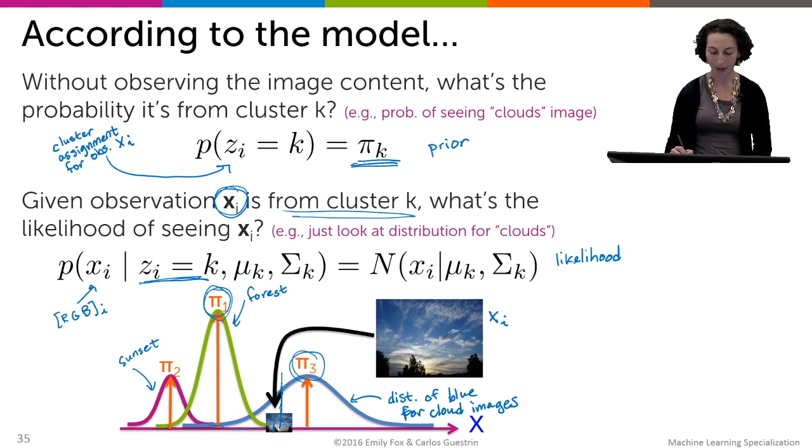I want to point out that this image, indeed, there should be uncertainty about whether it's assigned to the clouds cluster or the forest cluster, because here we see some trees and here we see some clouds. So it would be natural to have uncertainty on the assignment of this image.